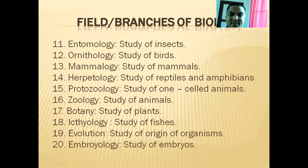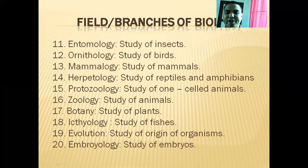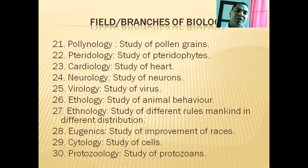Entomology is the study of insects. Ornithology is the study of birds. Mammalogy is the study of mammals. Herpetology is the study of reptiles and amphibians. Protozoology is the study of one-celled animals, like Paramecium and Plasmodium. Zoology is the study of animals. Botany is the study of plants. Ichthyology is the study of fish. Evolution is the study of the origin of organisms. Embryology is the study of embryos. Palynology is the study of pollen.